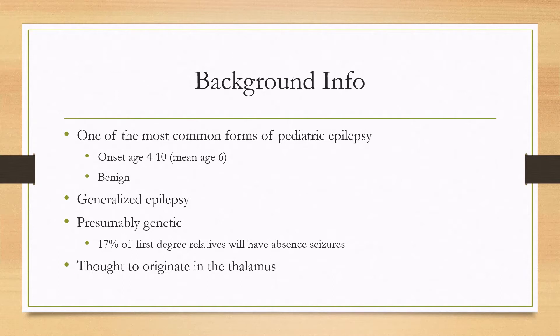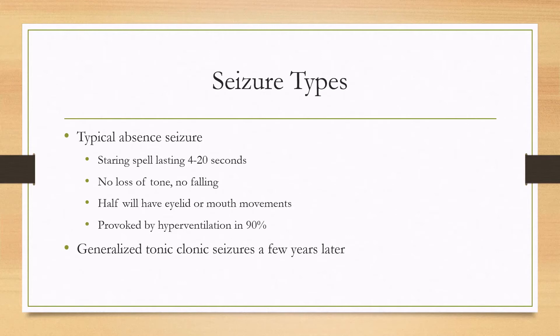This epilepsy is thought to originate in the thalamus. The typical absence seizure will generally be between 4 to 20 seconds, and it most commonly is a staring spell. There's usually no loss of tone and no falling over. In about half of people there will be some automatisms, such as eyelid movements or mouth movements.